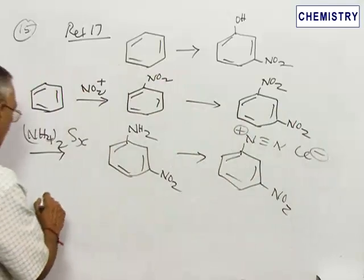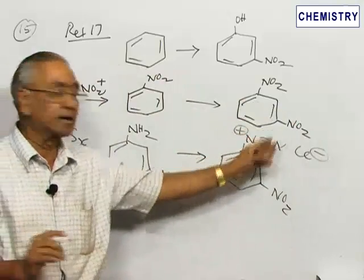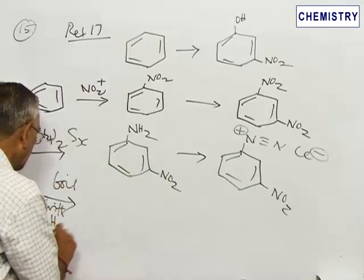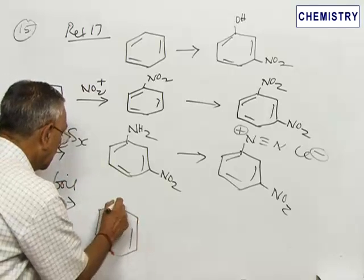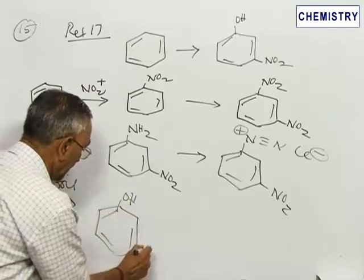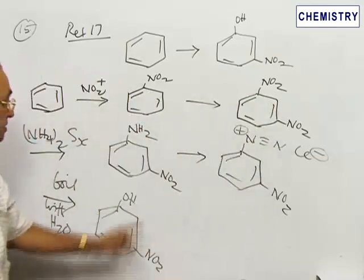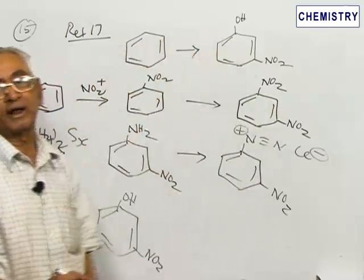When this diazonium chloride is boiled with water—one of the methods of converting a diazonium salt to a phenol—it gives rise to meta-nitrophenol. The nitro group remains unaffected throughout. This is the method by which benzene is converted to meta-nitrophenol.